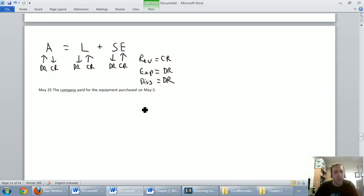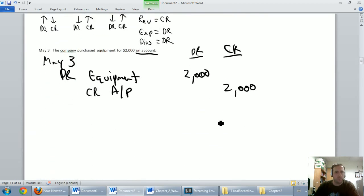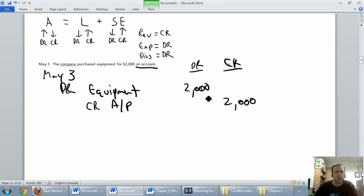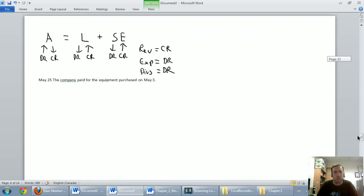May the 25th. The company paid for the equipment it purchased on May 3rd. I'm going to scroll all the way up in this problem and find May 3rd. There it was. May 3rd, we bought $2,000 of equipment on account. So we said give us the equipment, we'll pay you later. Well, now in the entry we're looking at, we're paying them. So how much are we paying them? $2,000. Is cash involved? Yes. Cash is going down. So when we pay off this bill, we're going to credit our cash because cash is going down by $2,000.